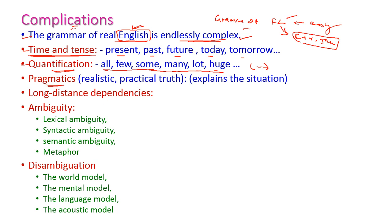Pragmatics is used to explain some truth of a sentence or the current situation. For long distance dependencies, we have some different terms. Ambiguity has four categories: lexical ambiguity, syntactic ambiguity, semantic ambiguity, and metaphor. For disambiguation, the four models are: world model, mental model, language model, and acoustic model. We will see all of these one by one.